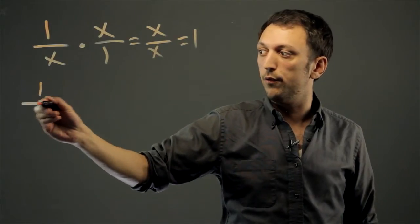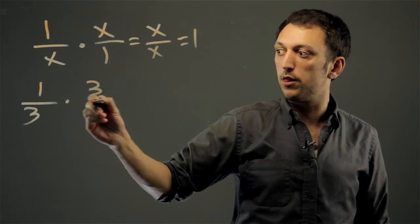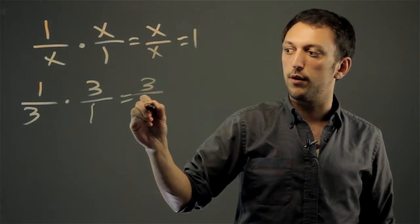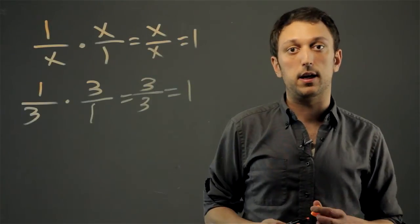If we did 1 over 3, we would take that multiplied by 3 over 1, we'd get 3 over 3, which would equal 1. And that is how you find the multiplicative inverse.